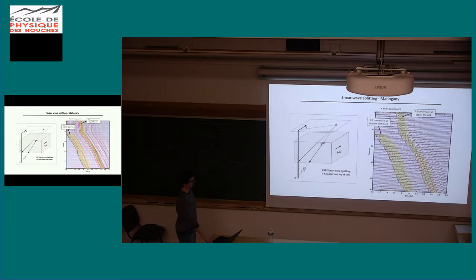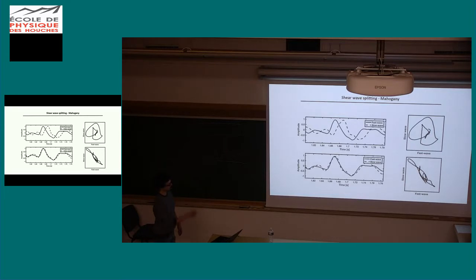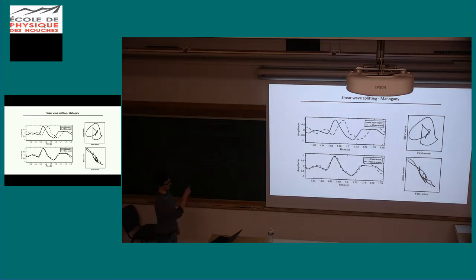We look at the seismic response of the receivers — on the right side that is the P-to-S conversion at the top of the salt, and the P-to-S converted wave at the bottom of the salt. We want to use shear wave splitting to measure the seismic anisotropy inside. I show you from one receiver how this actually looks — the top panel is rotated into the so-called fast and slow direction, where the waveforms are separated by a certain time delay.